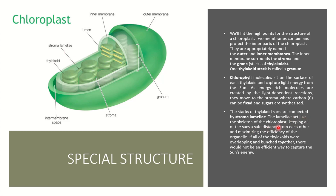The stroma lamella acts like the skeleton of the chloroplast, providing a maximum and efficient difference between the stacks. Stroma lamella provides a proper and efficient distance between two stacks of thylakoids. If stroma lamella were absent, all stacks of thylakoids would be attached to one another and would not be able to capture sunlight properly and efficiently. So stroma lamella provides a proper distance which allows easy and efficient capture of solar energy.